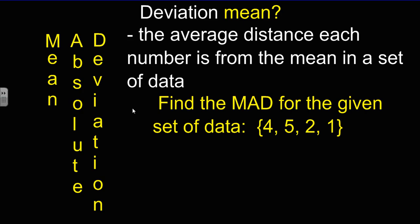Find the MAD for a given set of data, and I specifically chose these simpler numbers to help you better make sense out of the MAD. So we have 4, 5, 2, and 1 in our set of data.